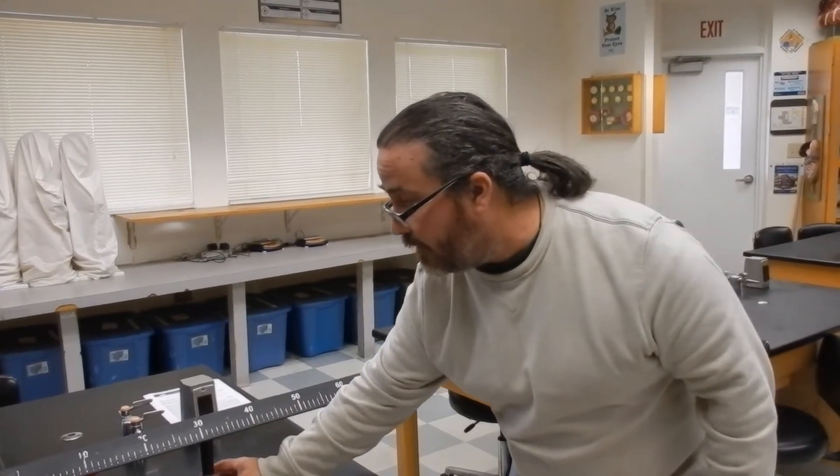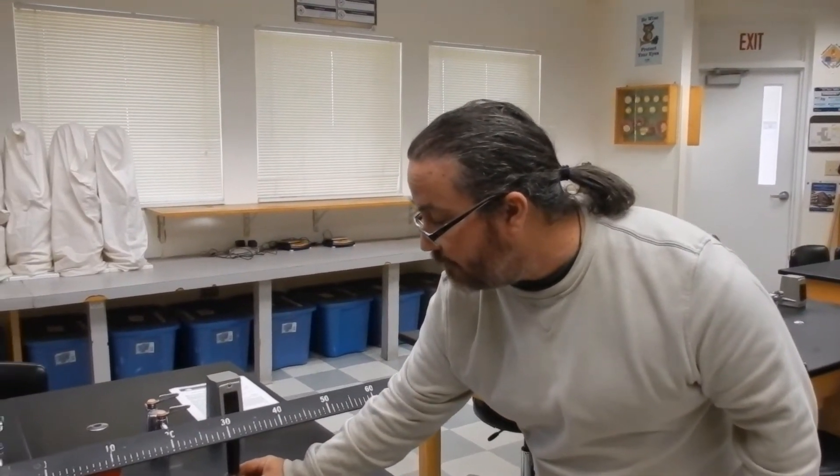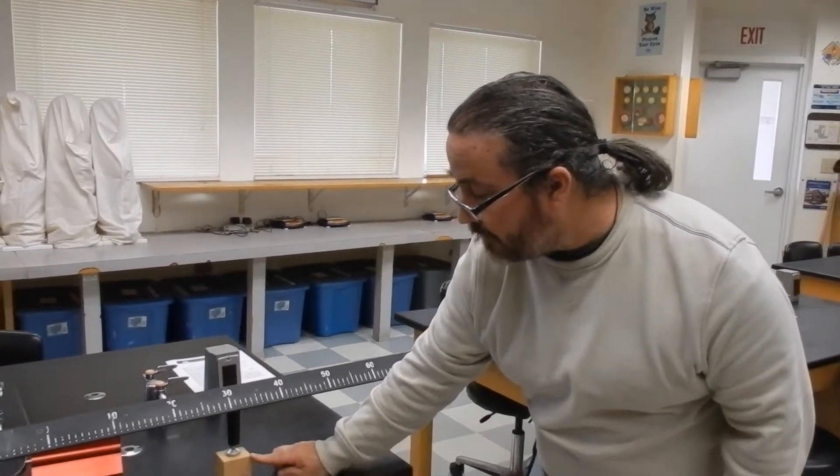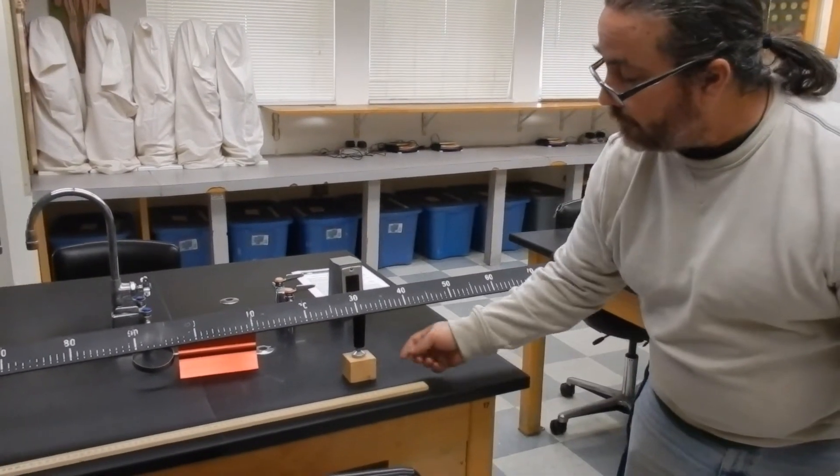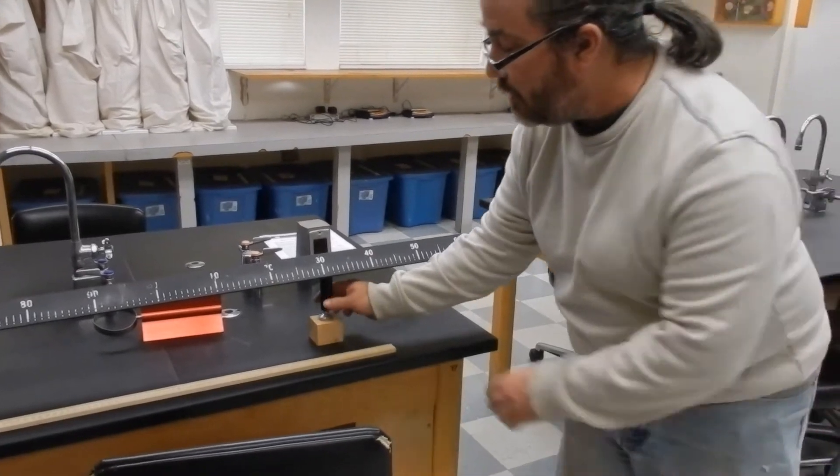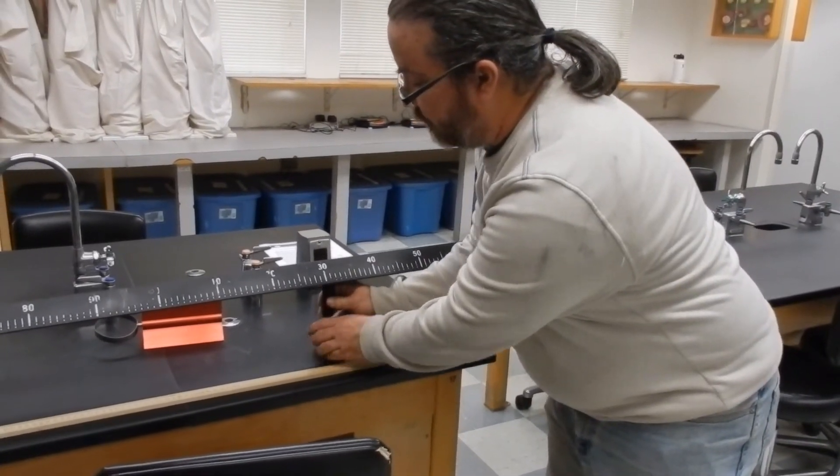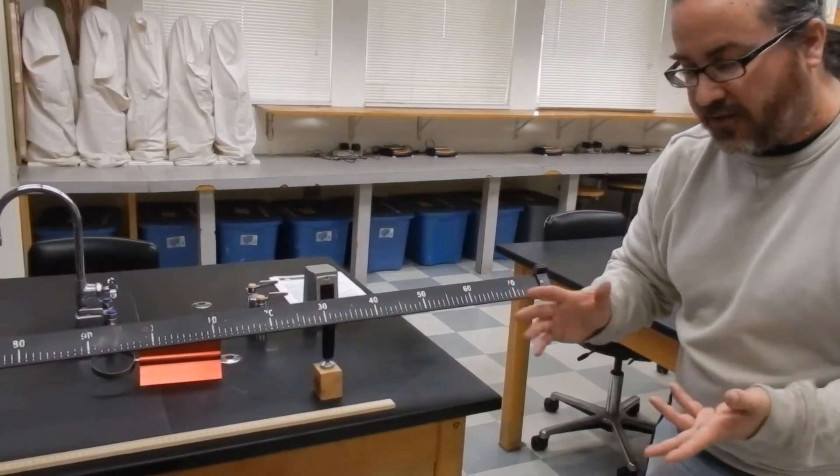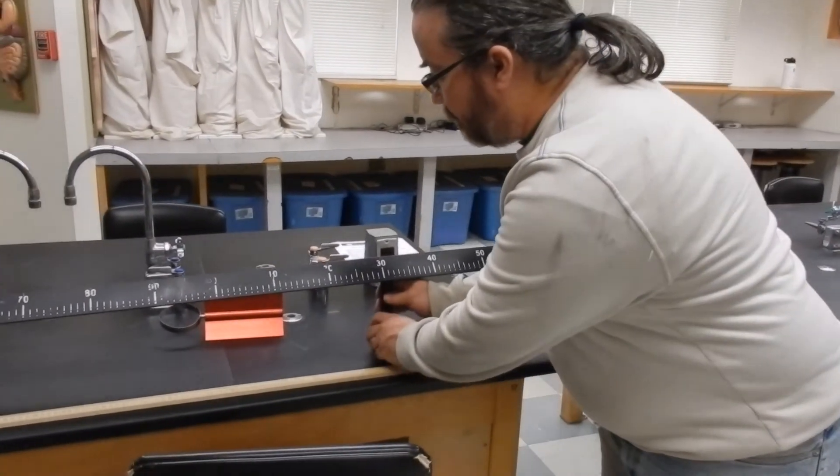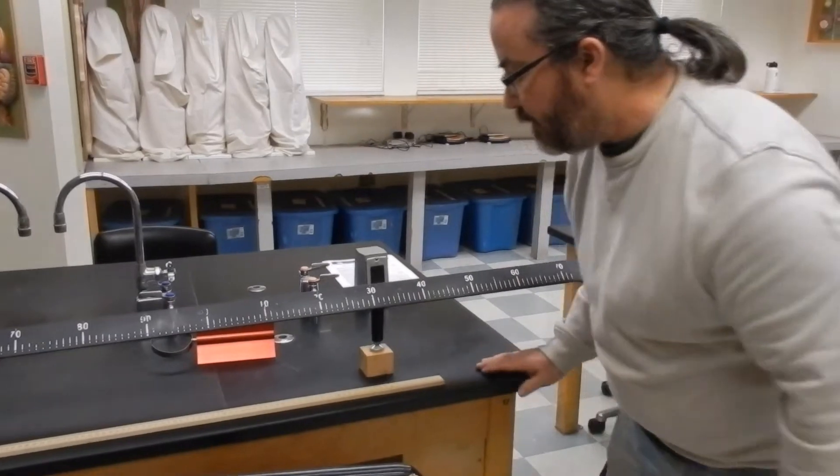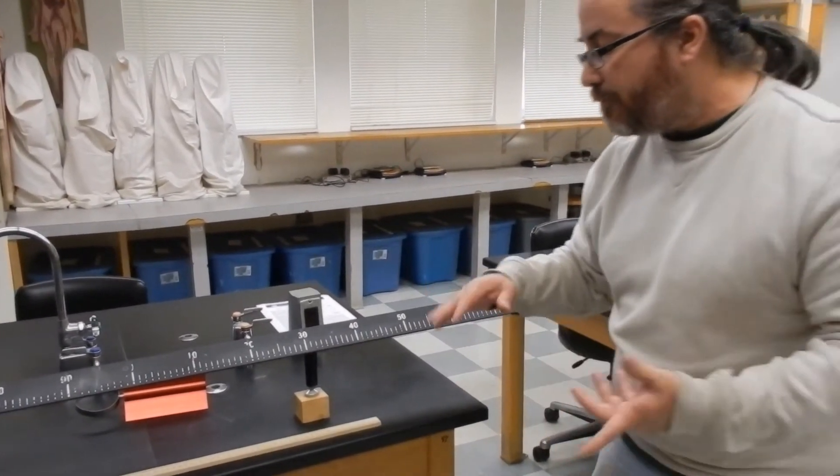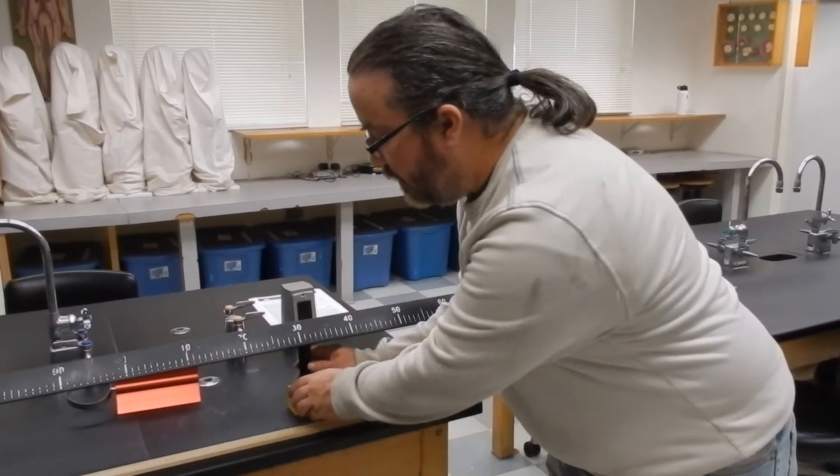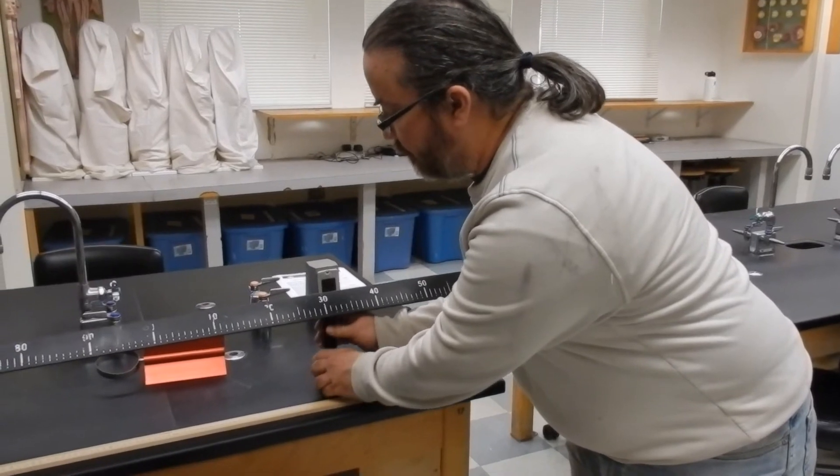So one last thing before I turn on the air track and do a little demonstration is that we usually use these little wooden blocks, and the wooden blocks have two profiles. They have a short profile, or if I turn it like this, they have a tall profile. So I would make sure that the students are all doing this consistently. I usually tell them to use the short profile, but it's up to you, just make sure that everyone's doing the same profile.